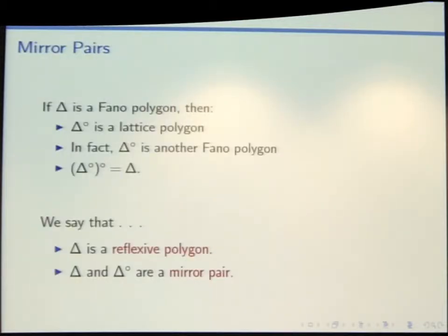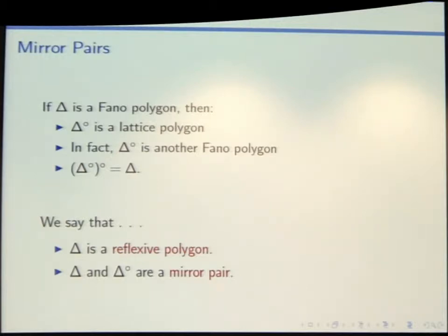We have a set of observations. Namely, we started with something that was a Fano polygon, we went through this duality procedure, and we got a new thing that was also a Fano polygon. In fact, that's a general property. If you start with a Fano polygon and you run this polar duality procedure, you're going to get a new thing that is also a lattice polygon.